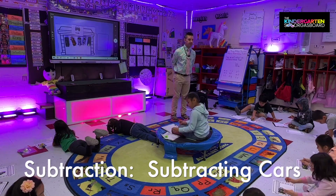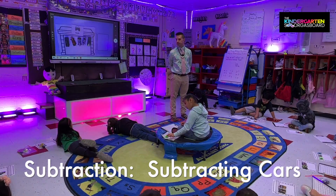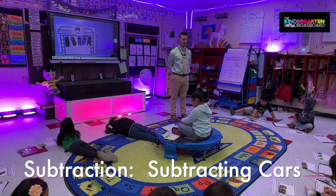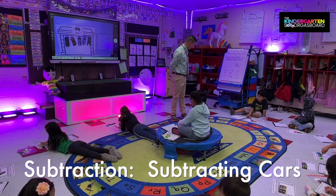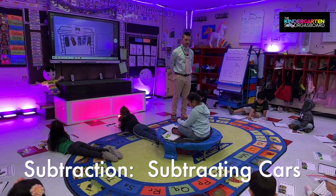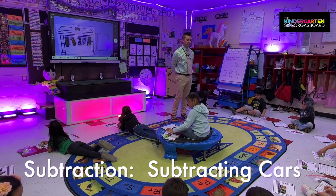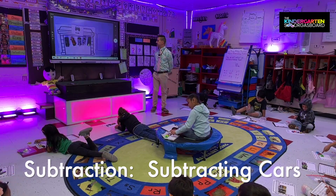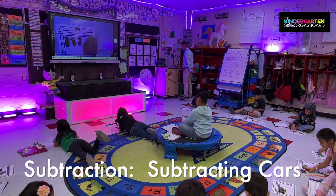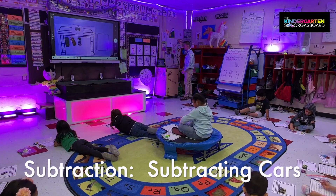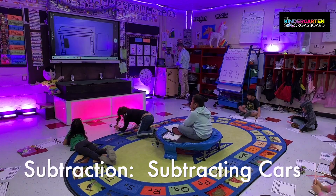Good job, Lisa. Good job, Miriam. All right, so how many cars do you have? Five. Minus? Two. So how many are we going to take away? Two. So take two cars out of your garage. And what's the answer? Three. So five minus two equals? Three. All right, write your equation.